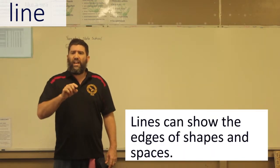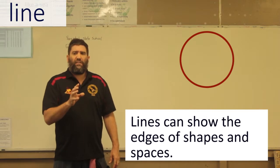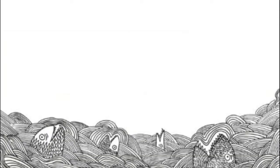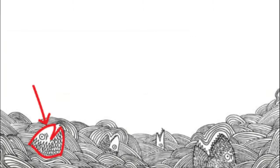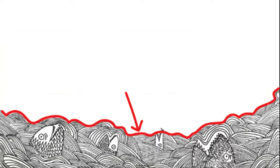Lines can show the edges of shapes, they can show spaces. So if we look at this picture we can see lines here showing the edges of shapes and we can see lines here showing the edge of a space.